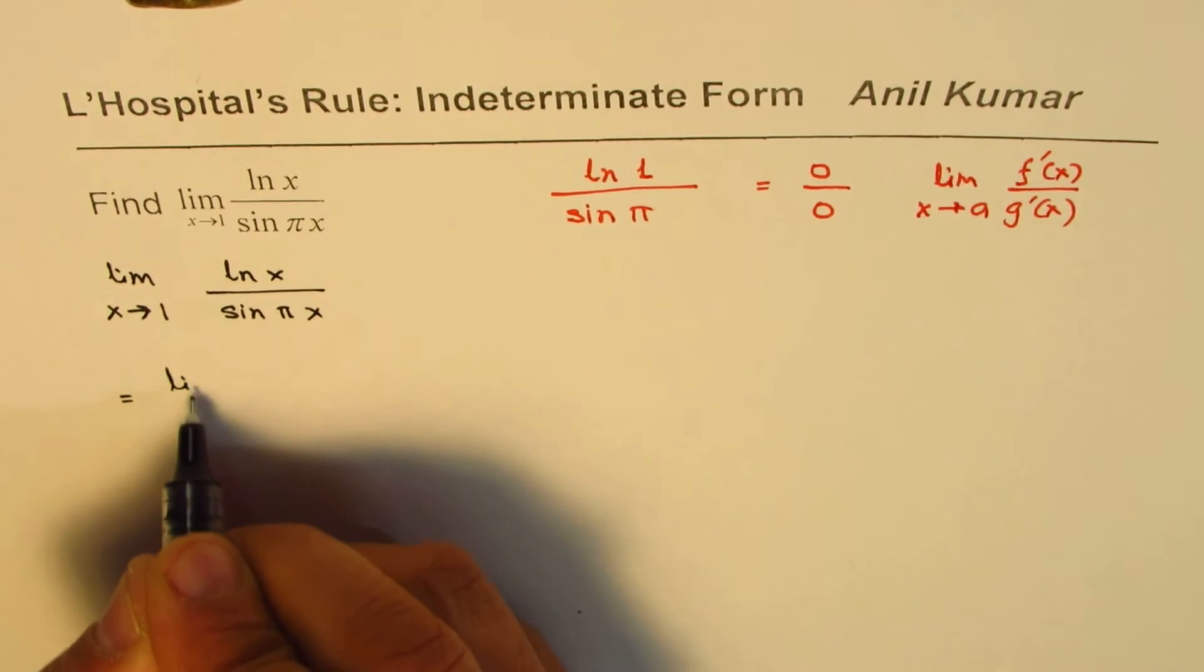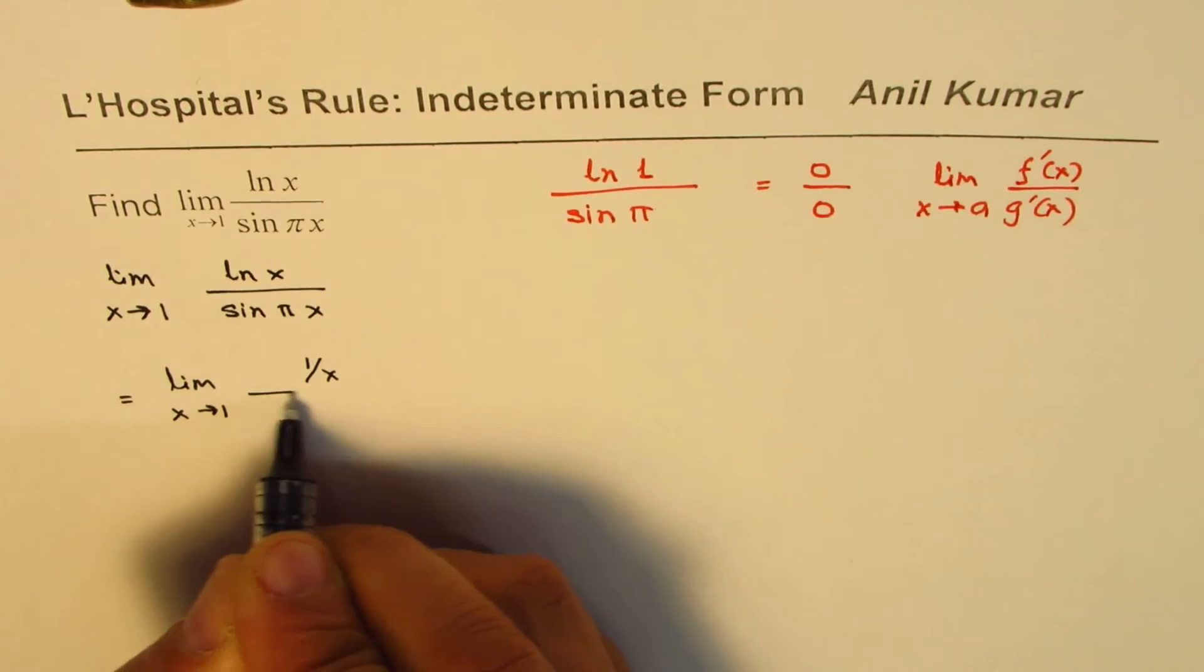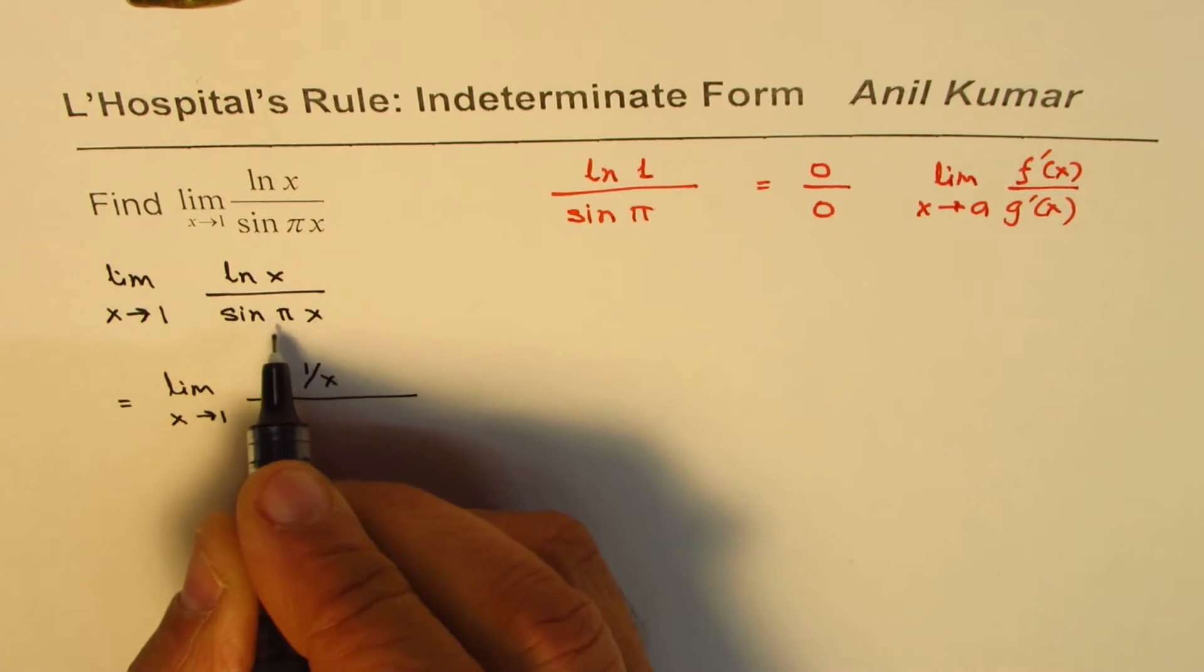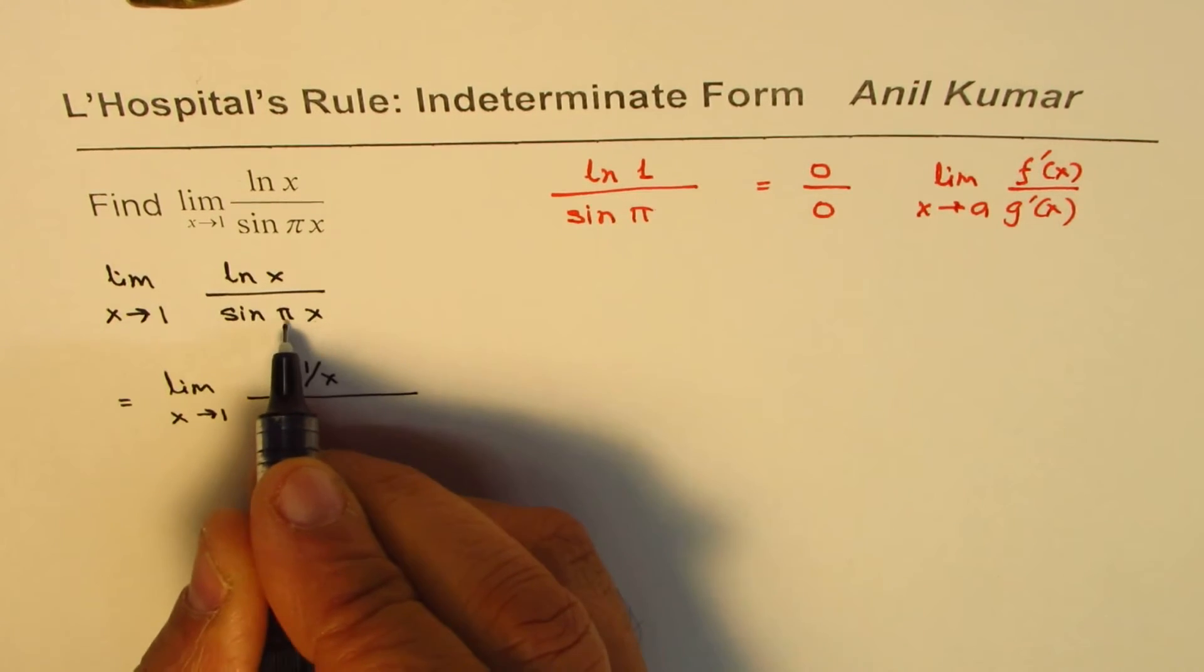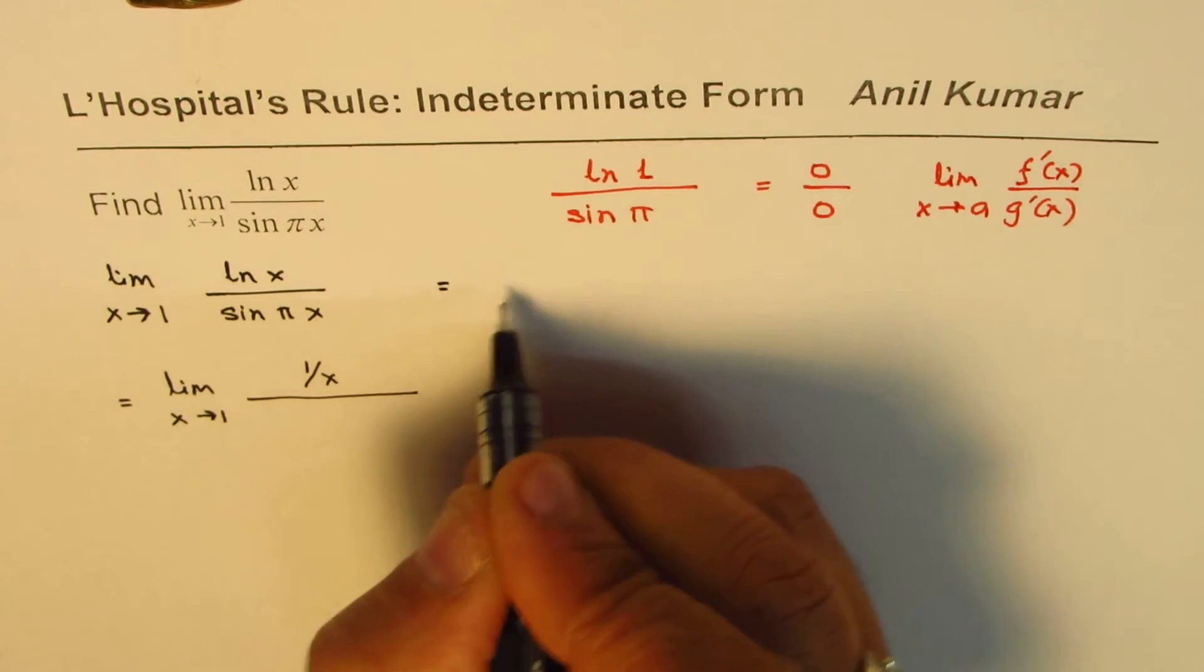is 1 over x. How about derivative of sine π x? Which is cos π x times π, derivative of the inside function. So let me write down here first,